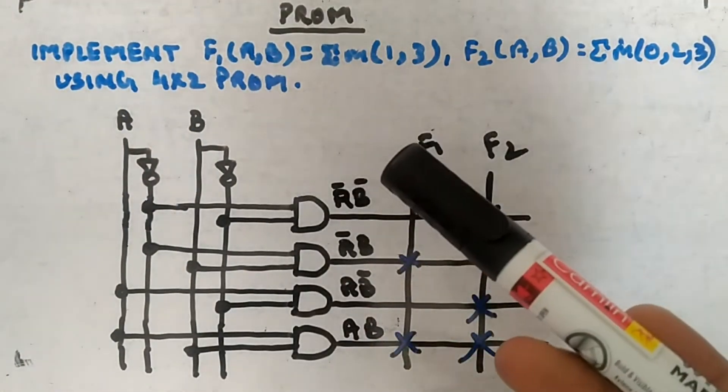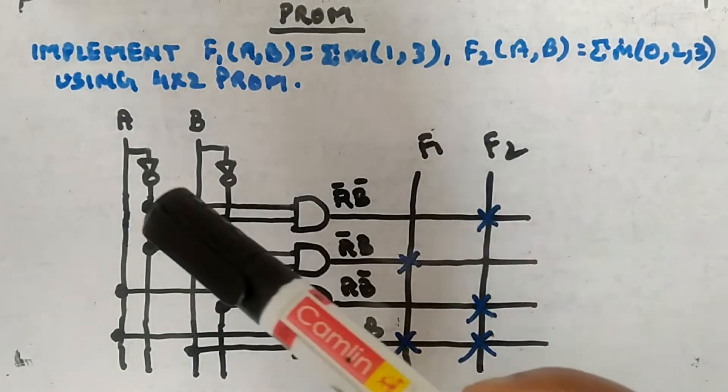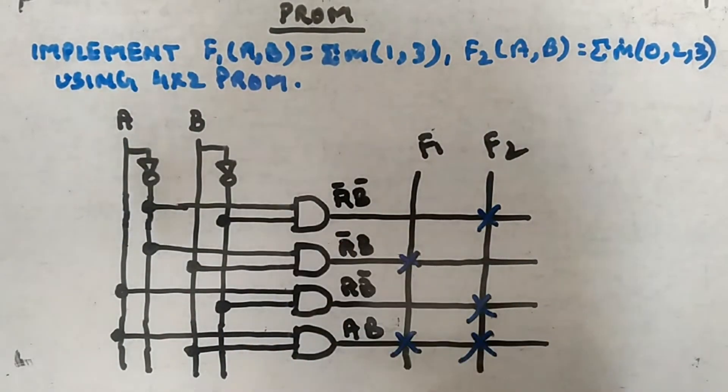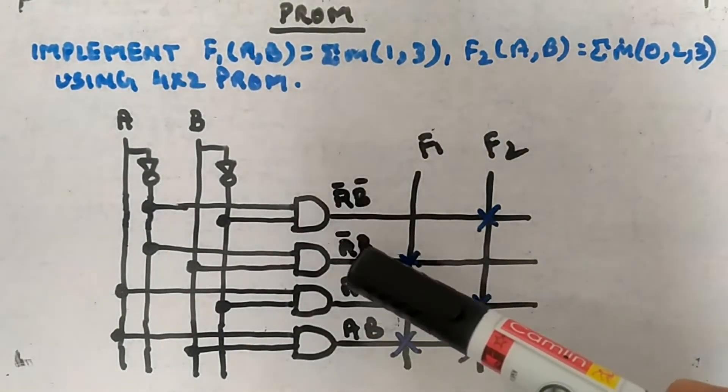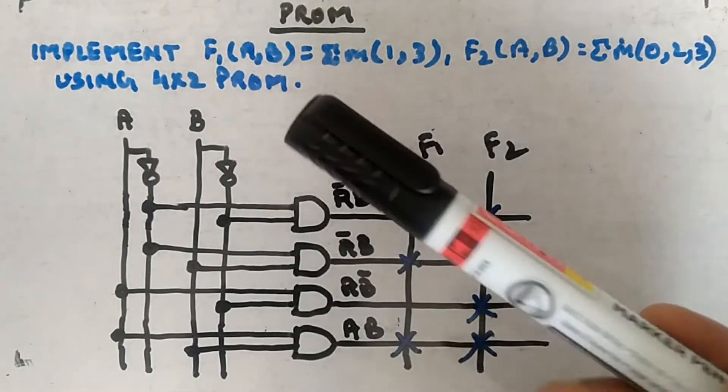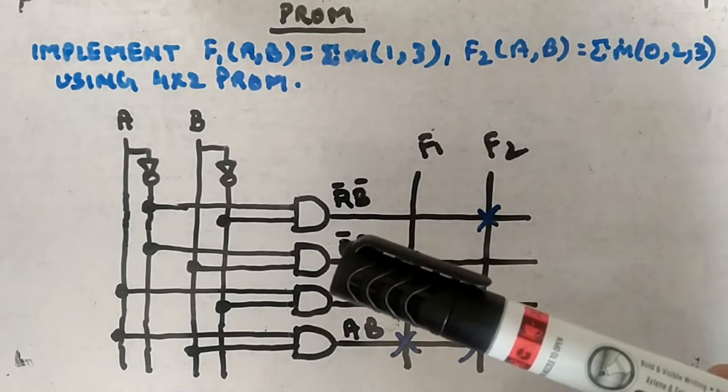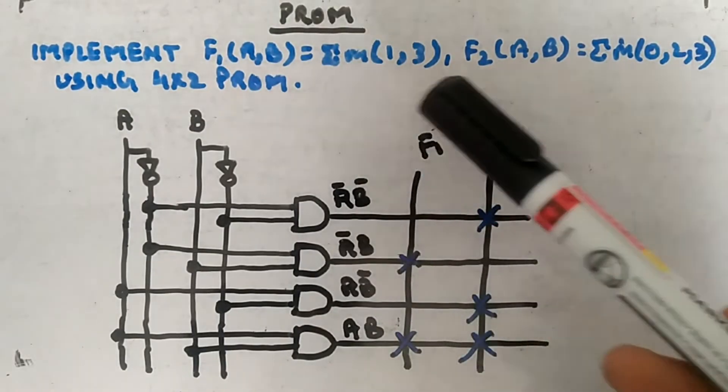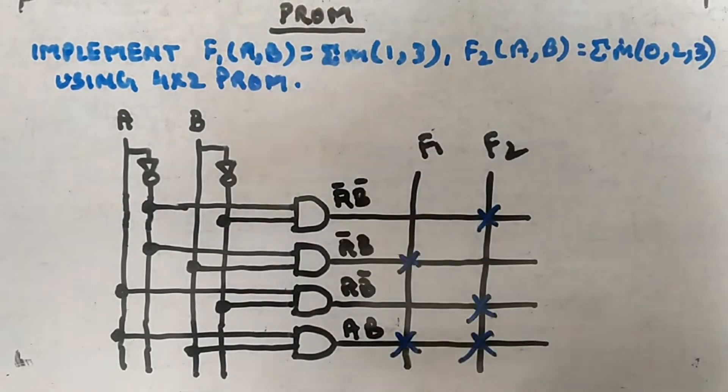Now here what I want to show you is another way of making the circuit without using decoder. So A bar, B bar is here, so A bar B bar, A bar B, A B bar, AB, so all the minterms will be generated in PROM. You're already aware of this.